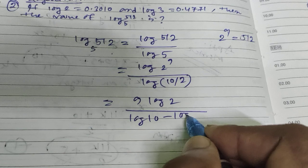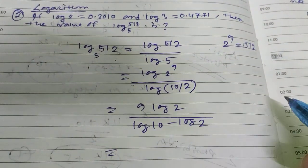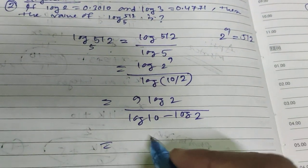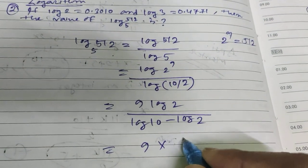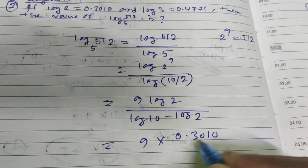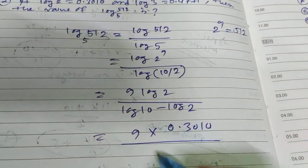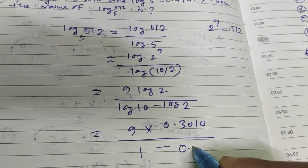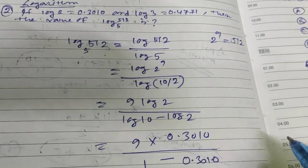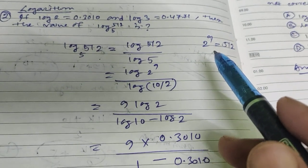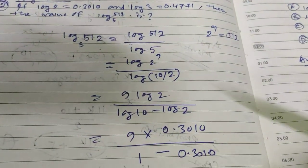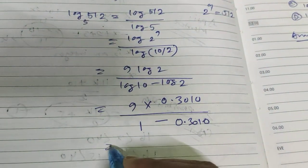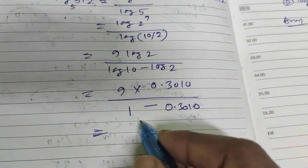Substituting the value of log 2, which is 0.3010, we get 9 times 0.3010 in the numerator. For the denominator, log 10 is 1, so we have 1 minus 0.3010. Note that we don't need the value of log 3 here, that's extra information.